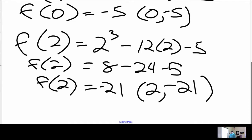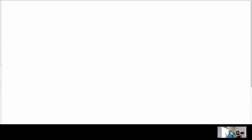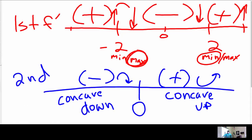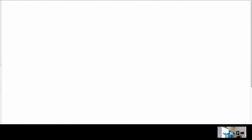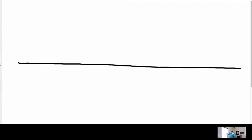Zero, negative 5 — it's not just a random point. It's the y-intercept, so it'll give us a little direction.